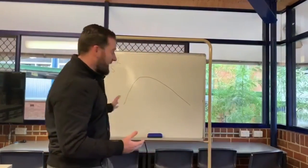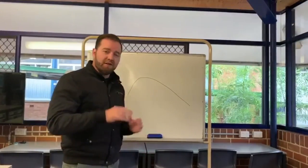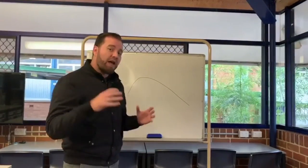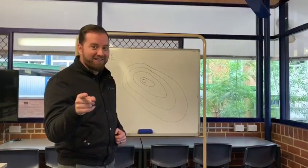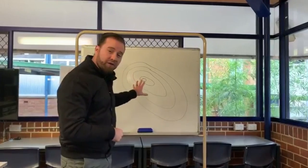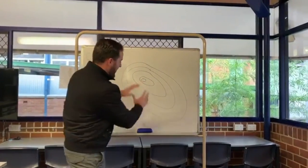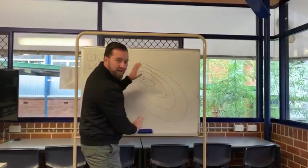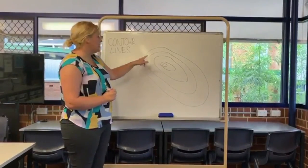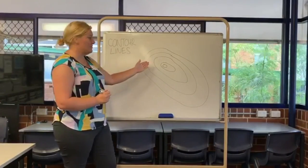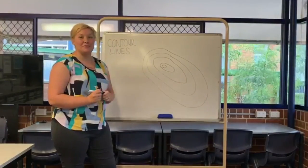So behind me we can see we've got a mountain. Obviously this is a side-on view. So how would we show this three-dimensional shape on a contour map? Well, it would look exactly like this. So now we have our top view — these concentric circles. The top of the mountain is right in the middle and as we go down the mountain we go to the outside. Where our contour lines are really close together was the steep side of our slope, and where our contour lines are much more spread out is a much more gradual slope.